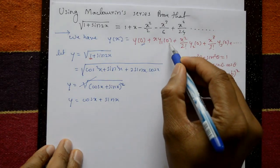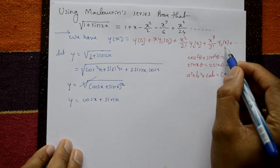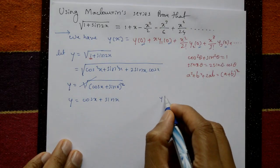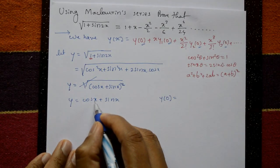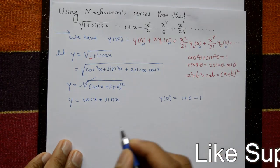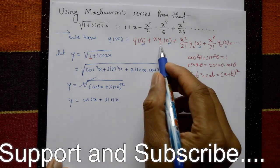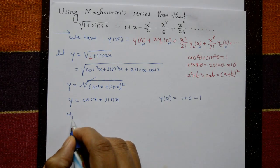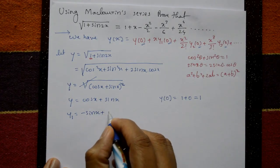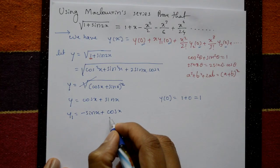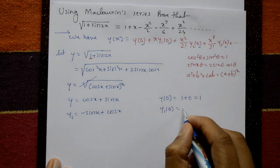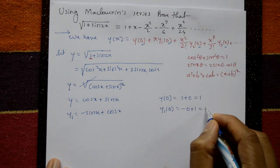Now find the required values. y(0) = cos 0 + sin 0 = 1 + 0 = 1. Differentiate: y1(x) = −sin x + cos x. Put x = 0: y1(0) = −sin 0 + cos 0 = 0 + 1 = 1.